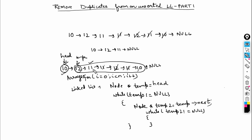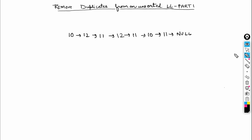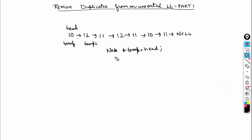So, I have a pointer temp pointing to head, and temp2 pointing to the next node. I create node* temp pointing to head and use: while temp is not equal to null, or more specifically while temp->next is not equal to null, proceed.